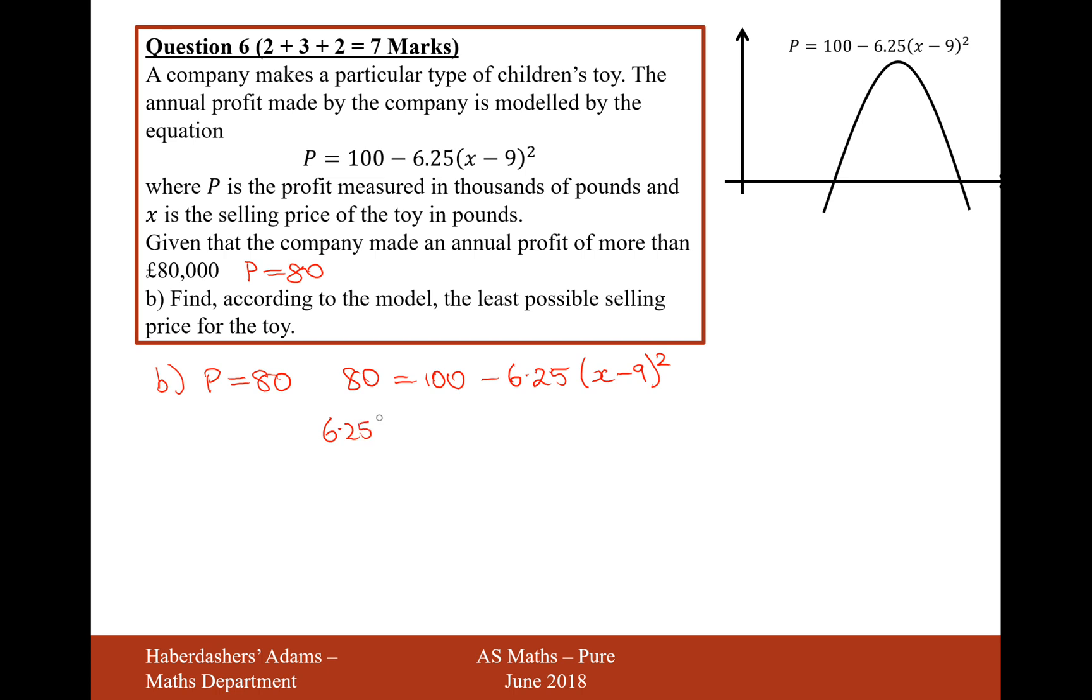Let's move that 6.25x minus 9 squared onto the left, and then move the 80 onto the right, and you'll get 20. Then divide by the 6.25, 20 divided by 6.25 on your calculator, you get 16 over 5, or 3.2. Square root on both sides, and it'll be x minus 9 equals plus or minus root 3.2, and then add your 9 onto the other side, so it'll be 9 plus or minus root 3.2.